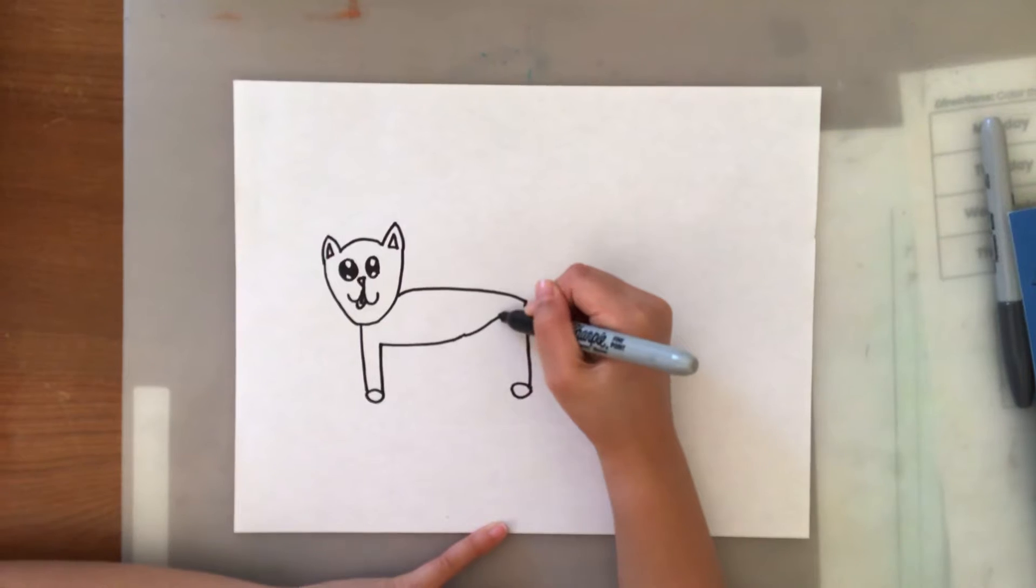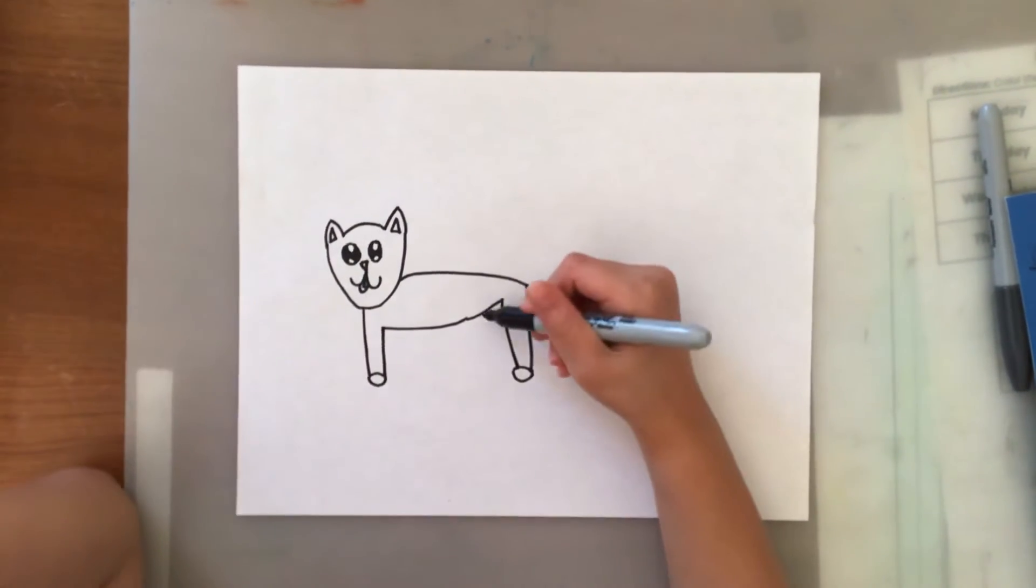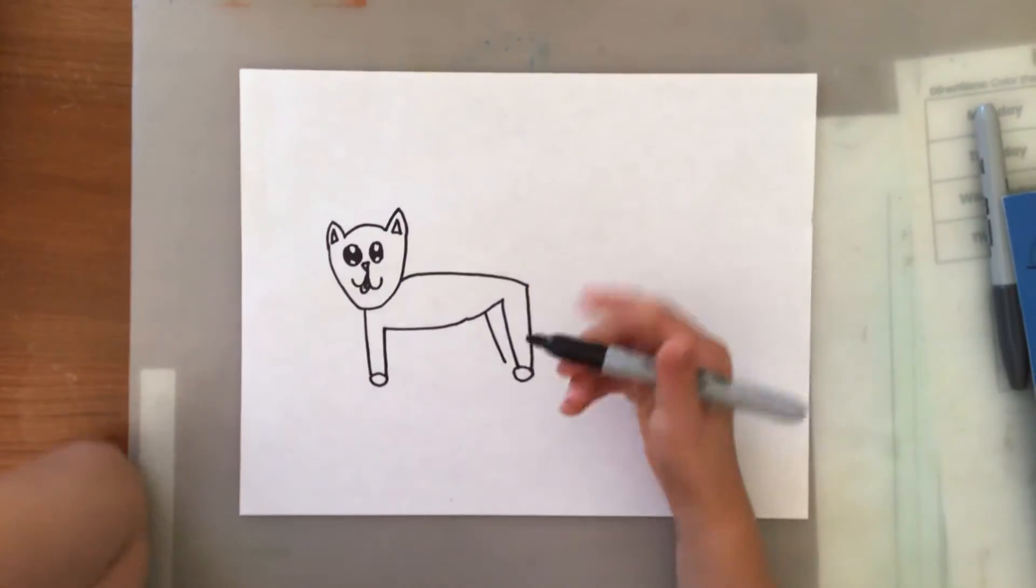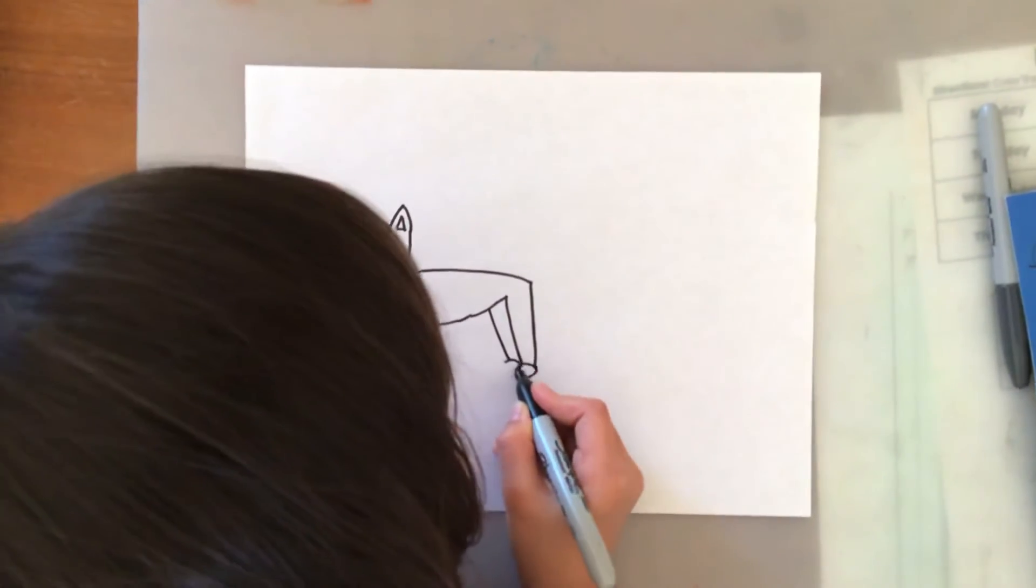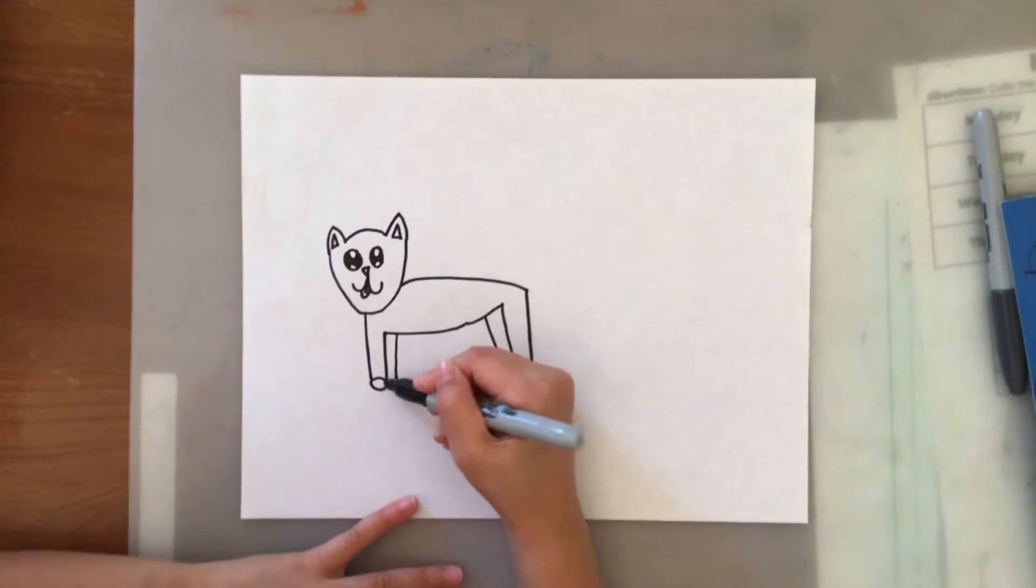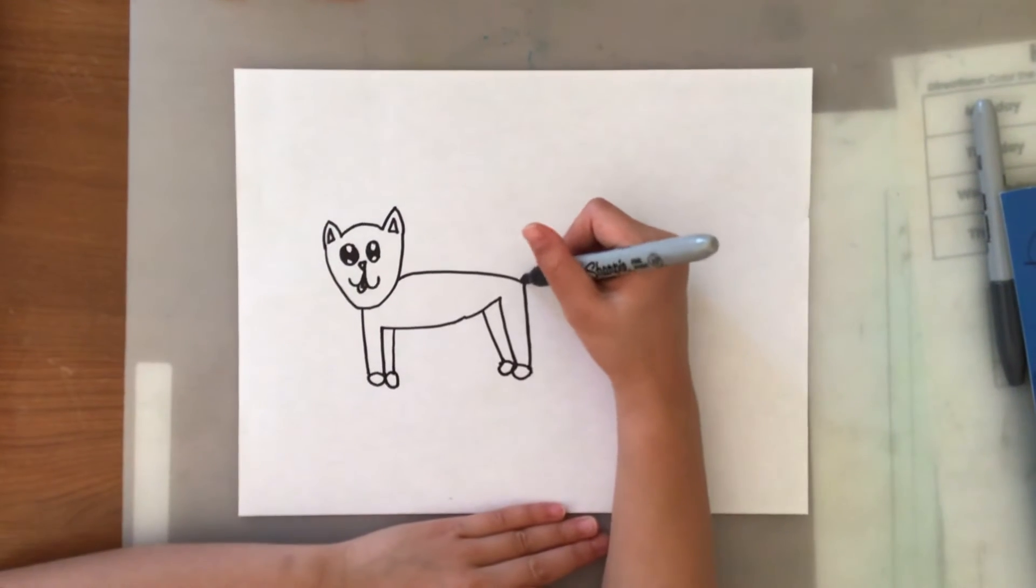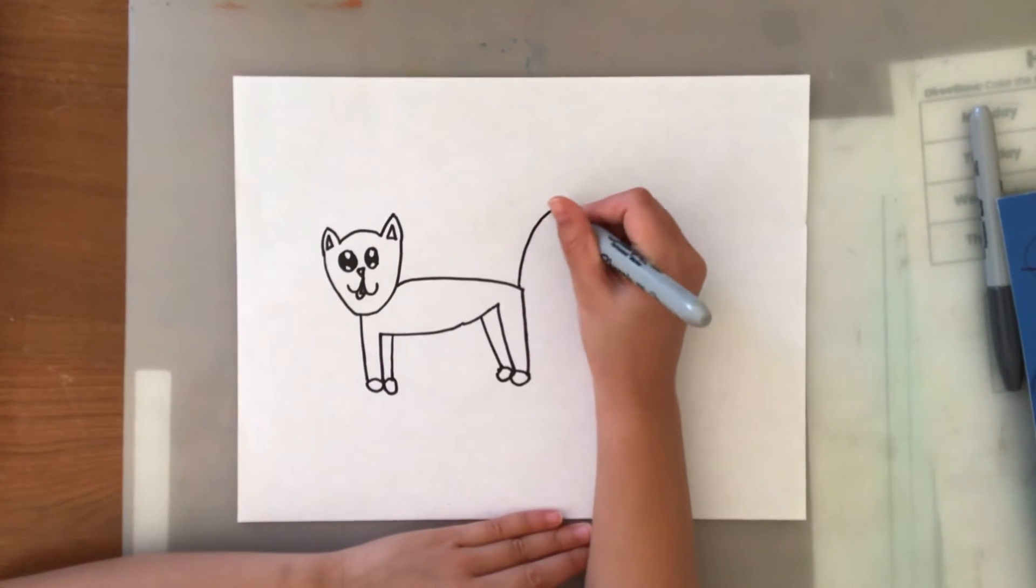Then here, but then this is the tricky part. We're gonna do another one at the other side and do like this, and another side here and do like this. Let's do the tail, if not it'll be a no-tail cat.